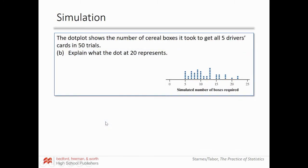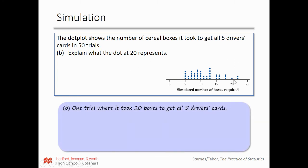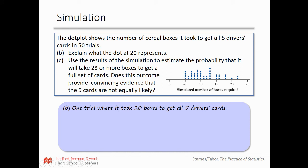The dot plot shows the number of cereal boxes it took to get all five drivers in 50 trials. Each dot represents one trial. A dot at 20 means one trial took 20 boxes to get all five drivers. Three dots at 15 means three trials each took 15 boxes. Now we use the simulation results to estimate the probability that it takes 23 or more boxes to get a full set of cards.